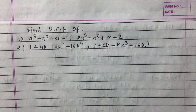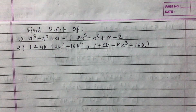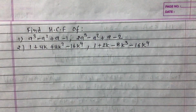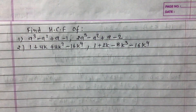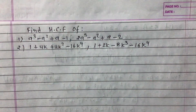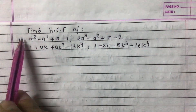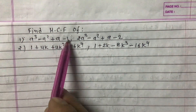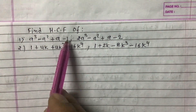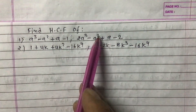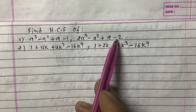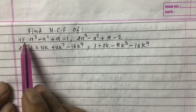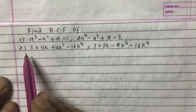Students, today I'm going to teach you two very important equations from algebra related to HCF and LCM. Question one has two expressions: the first is a³ - a² + a - 1, and the second is 2a³ - a² + a - 2. I'll solve question one first, then you can see the solution for number two.